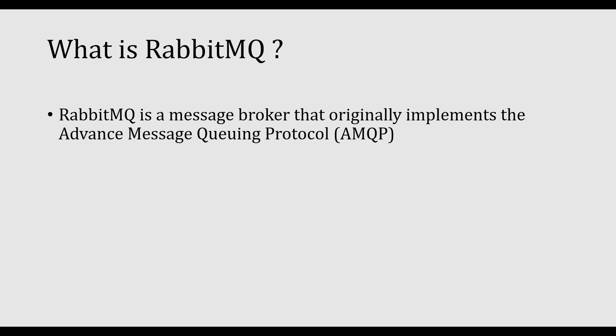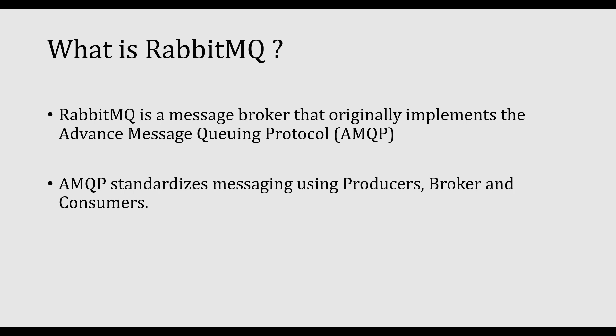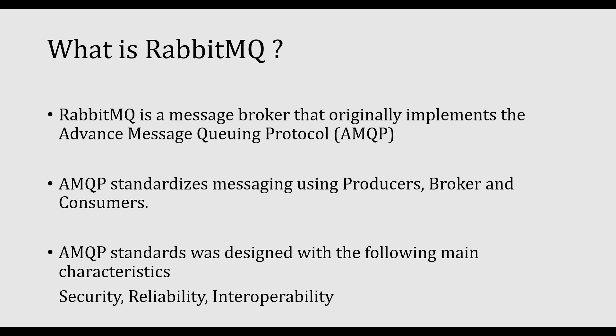RabbitMQ is a message broker that originally implements Advanced Message Queuing Protocol, in short AMQP. This AMQP standardizes messaging using producers, broker, and consumers. To perform message queuing we need three key components: producers, broker, and consumers. The producer will publish the message, broker will hold the message, and consumer will consume the message.